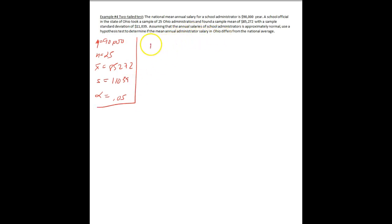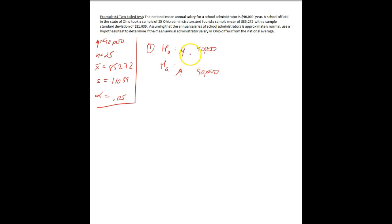Step one — H-naught and H-A. We're testing a mean proposed to be $90,000. The question is what operators do we use. We look at the last sentence: use a hypothesis test to determine if the mean annual administrator salary in Ohio differs from the national average. So it differs — no directional — so H-A is not equal to. And H-naught has to be equals to.